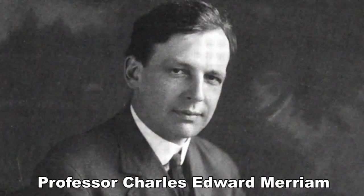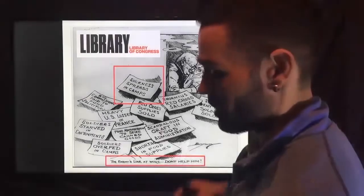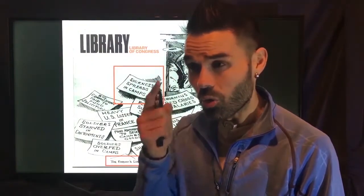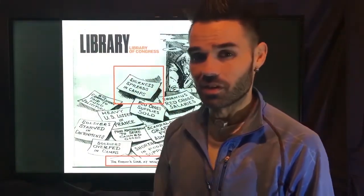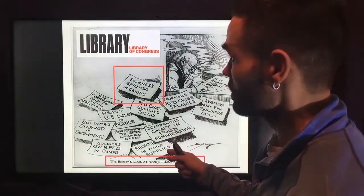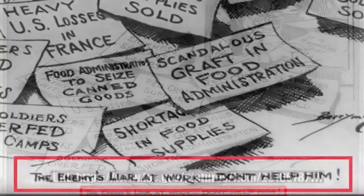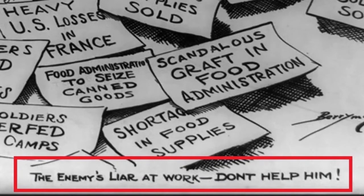They also used scientists like Charles Edward Merriam, a political scientist. This political cartoon, commissioned by the Committee on Public Information — the propaganda office of the US government — can be found in the Library of Congress. There's the URL; you can go fact-check it. At the bottom it says: 'The enemy's liar at work — don't help him.'